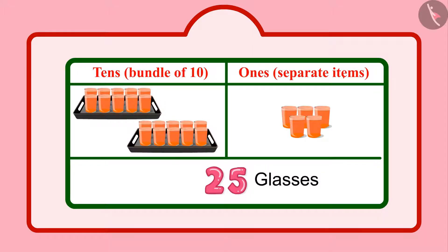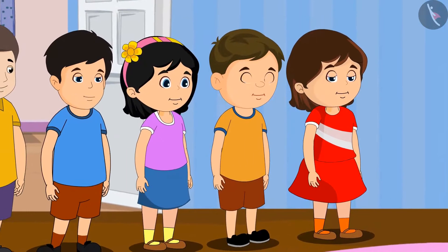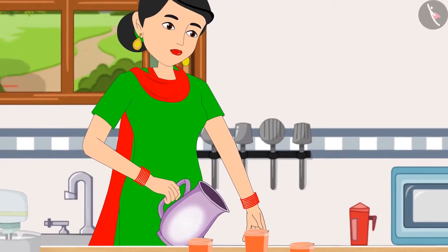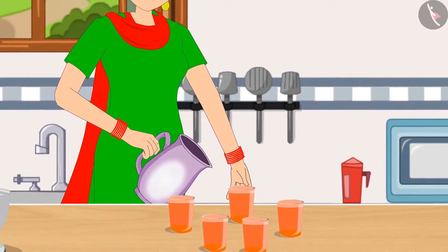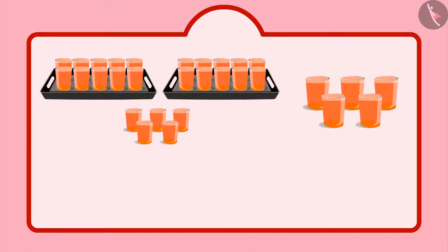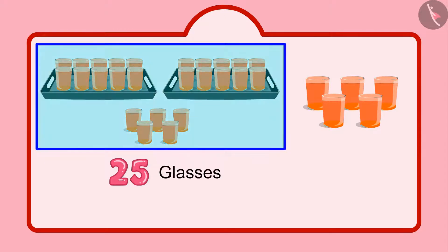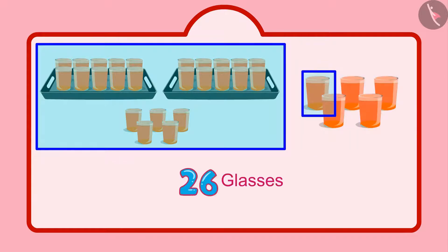Children, in these 25 glasses, two means two tens and five means five units. After some time, some more friends of Chotu came home and Chotu's mother made more sherbet for them. Chotu distributed a total of 25 glasses of sherbet and after that five more glasses, so that makes it 26, 27, 28, 29, 30.